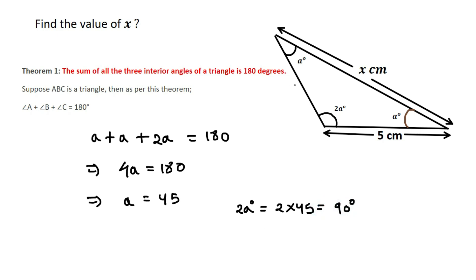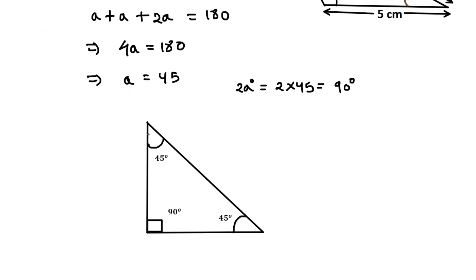With a as 45 degrees and 2a as 90 degrees, this triangle can be redrawn as a right-angle triangle. Let's name the vertices A, B, and C.